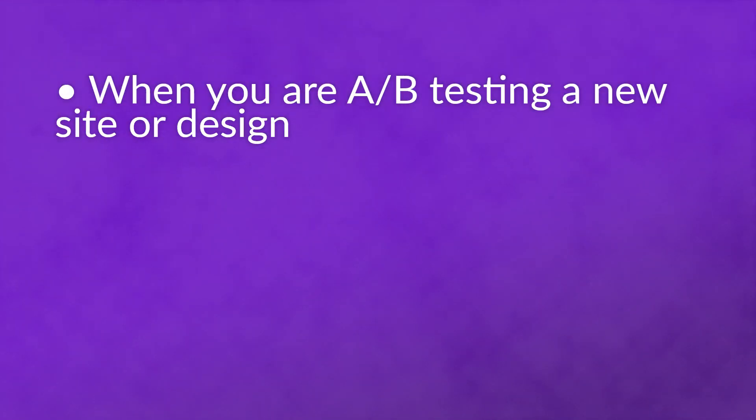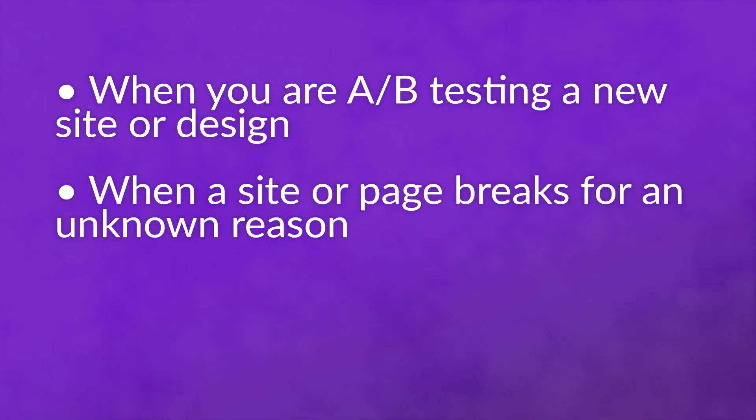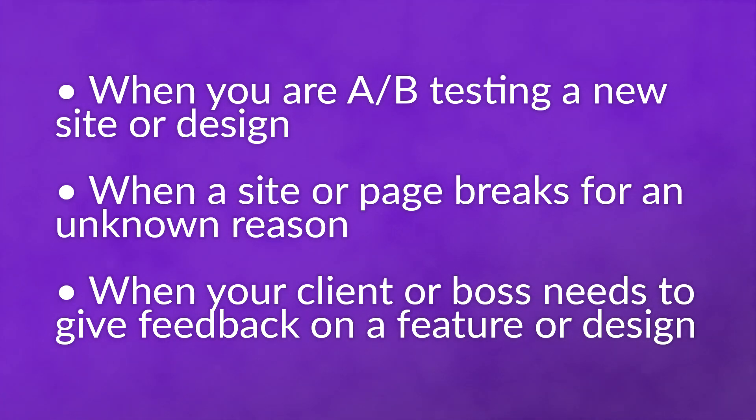Here are three examples for when you use a 302 redirect: when you are A/B testing a new site or design, when a site or page breaks for an unknown reason, and when your client or boss needs to give feedback on a feature or design. Just remember that HTTP code 302 is not meant to be used over a long period of time.